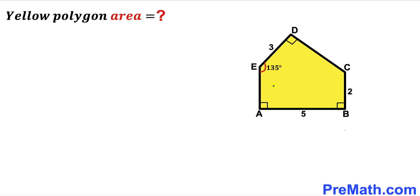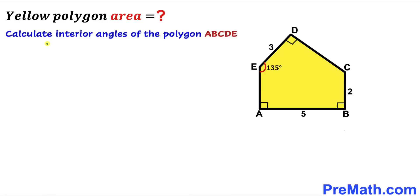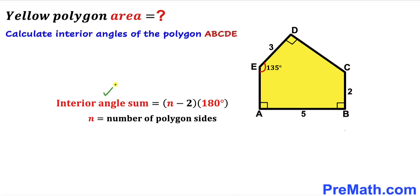Let's get started. We know this angle is 135 degrees, this angle is 90 degrees, this angle is 90 degrees, and likewise this angle is 90 degrees. So we must calculate this remaining angle as well before we move any further. We are going to calculate the interior angles of polygon ABCDE, and let's recall the interior angle sum formula.